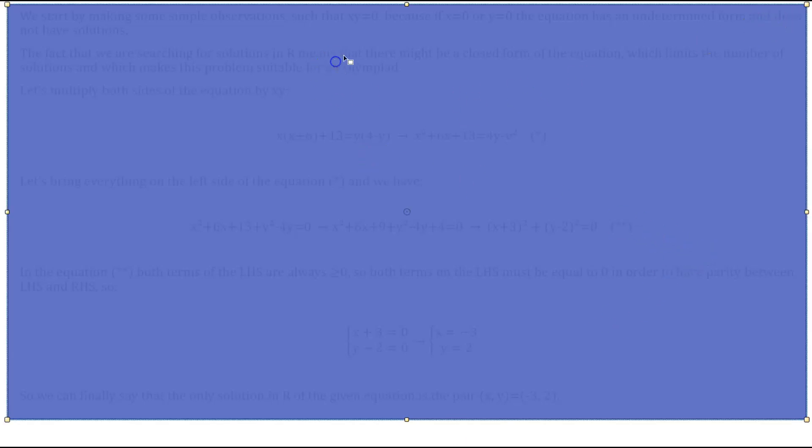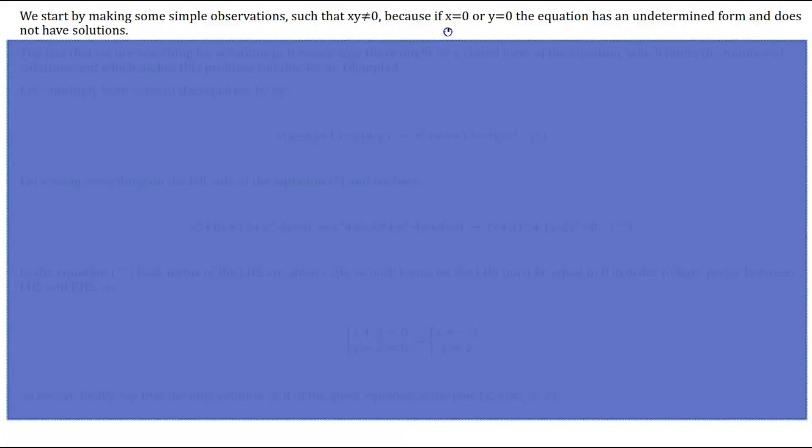I've covered the solution as always in order for us to go through it step by step together. We start by making some simple observations regarding the problem, such that x times y cannot be equal to 0, because if x=0 or y=0 the equation has an undetermined form and does not have any solution.